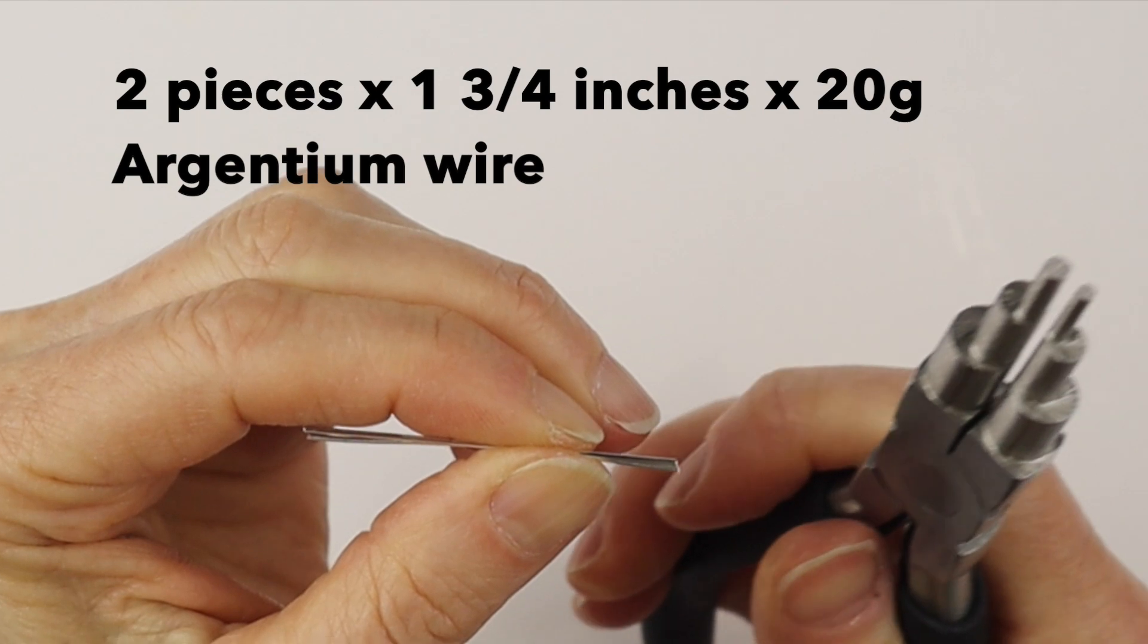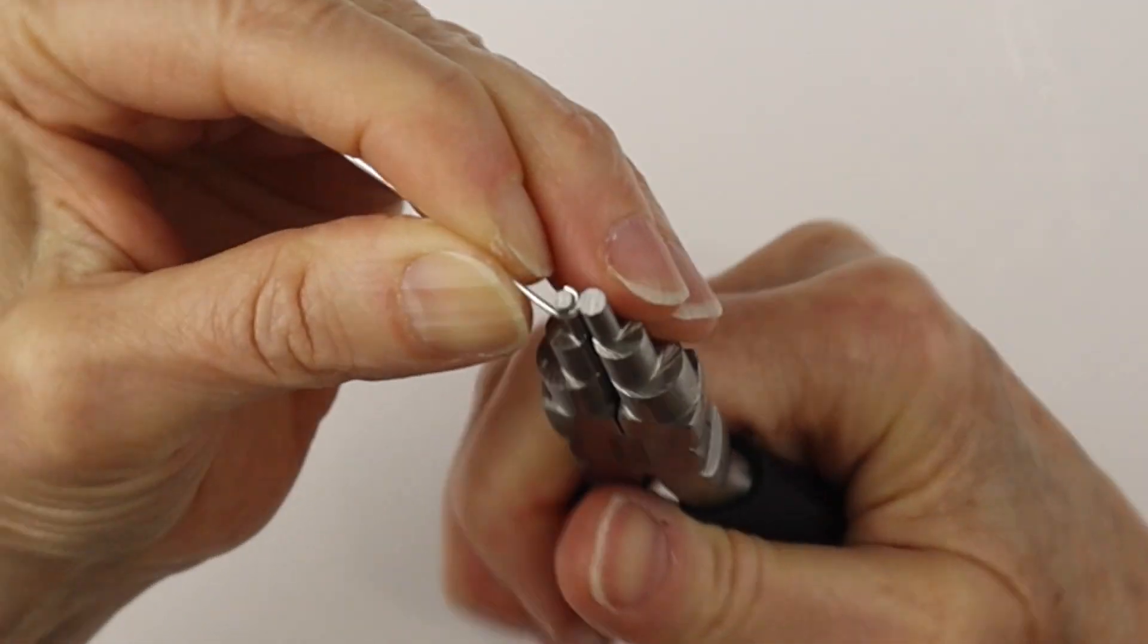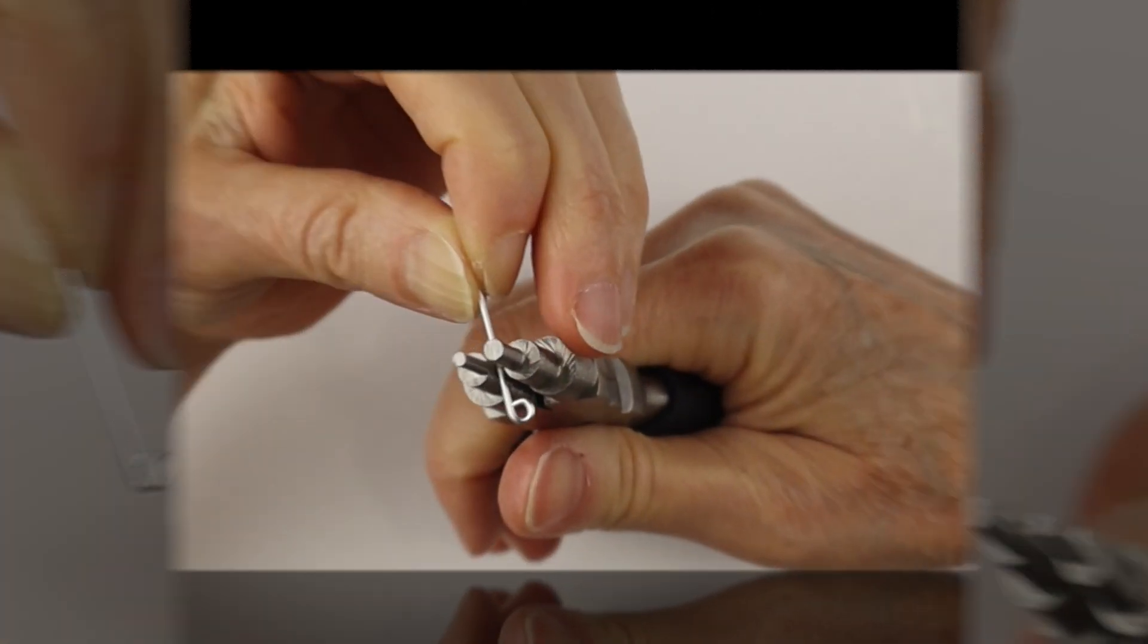And then we're going to make some earring hooks with Argentian silver wire. So we're just going to hold the two pieces together and turn it into a loop.